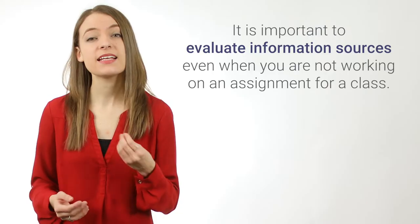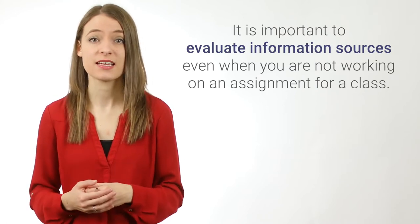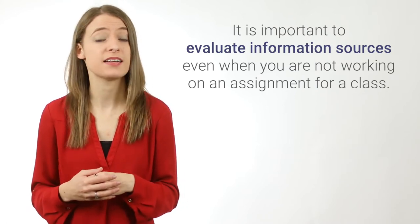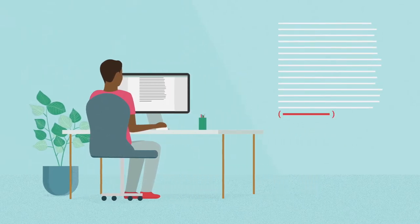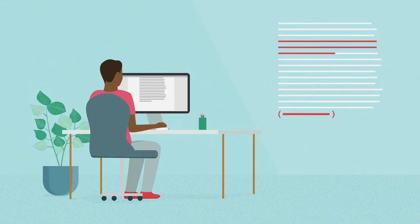In this video, you will evaluate the sources your Google search returned to determine whether or not they are credible. It is important to evaluate information sources even when you are not working on an assignment for a class. You may see an article posted on social media that seems far-fetched, or an advertisement for a product that seems too good to be true. If you are writing for work or school, using a source that is not credible may cause you to include incorrect information in your paper or report.